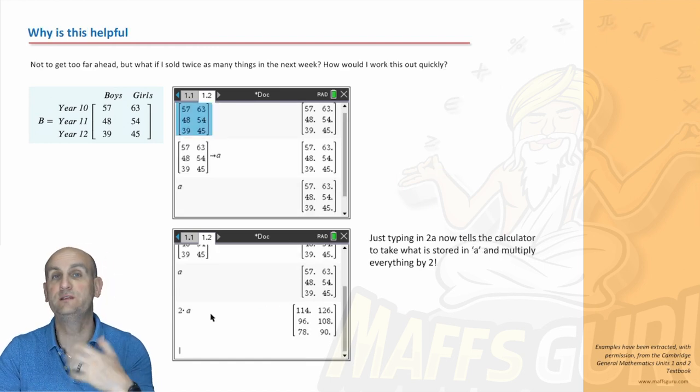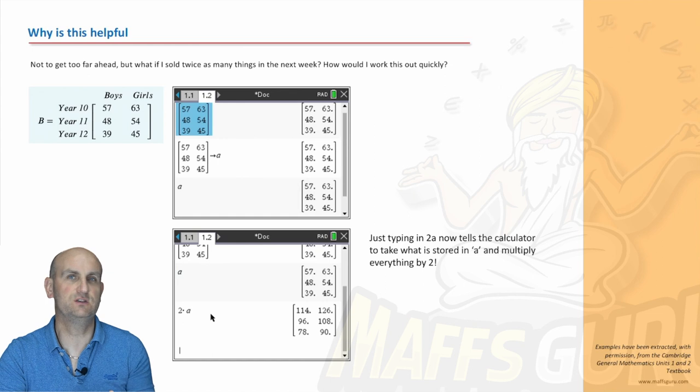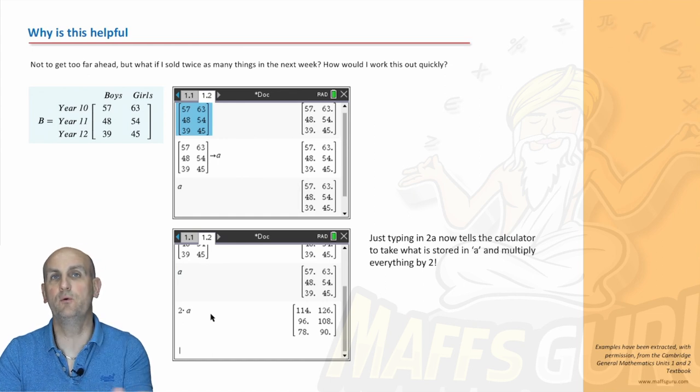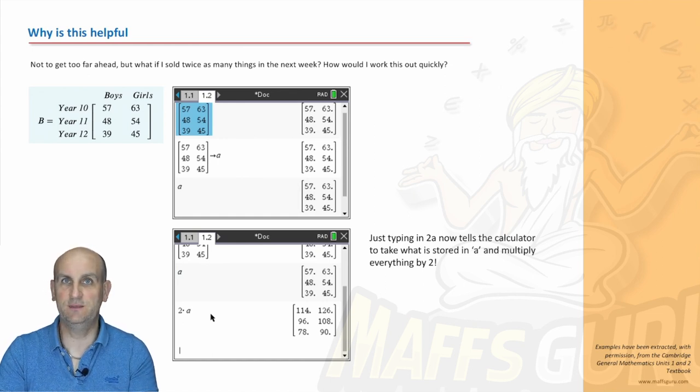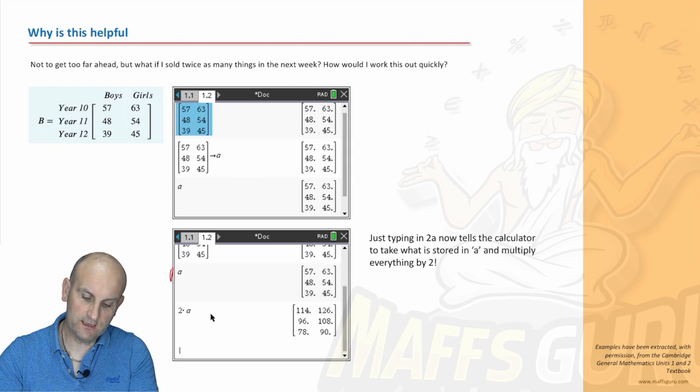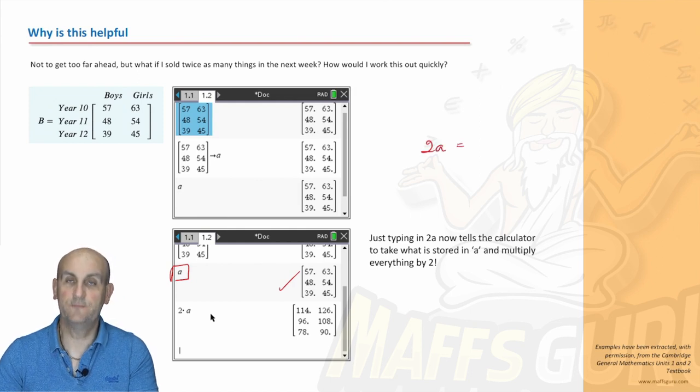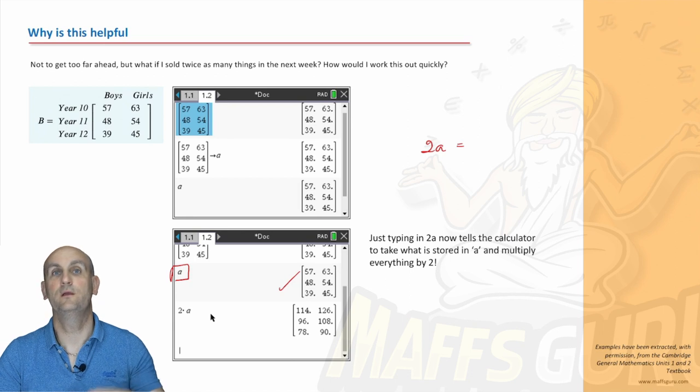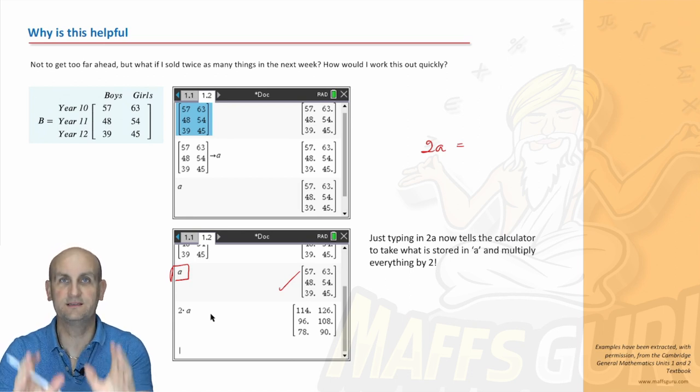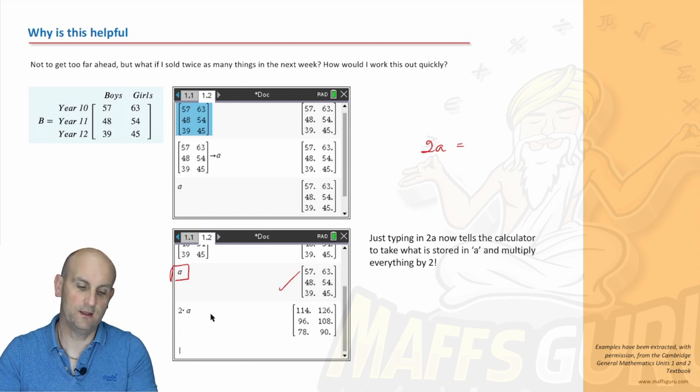Now, why would this be helpful to us? As I say, this is rushing ahead a little bit. But what if I wanted to double all the values inside that matrix? Well, having already defined it as A and my calculator's got it in, then funny enough, all I need to do is do 2A and hit the enter key. And out comes that matrix with all of those numbers doubled. Now, it's a little bit ahead of a game. That's coming in the video. But entering and using the store is going to make your life a lot easier.